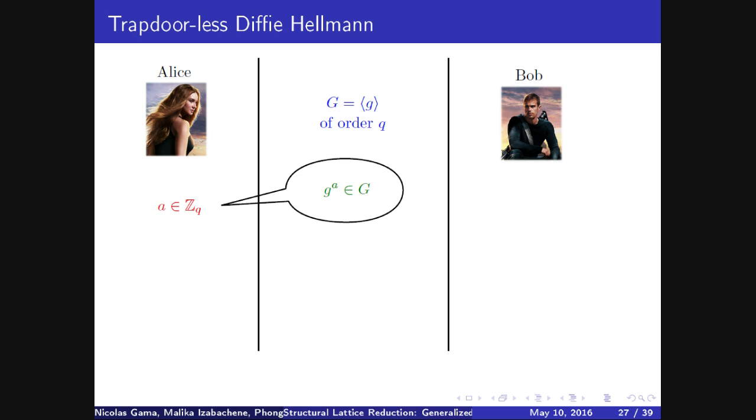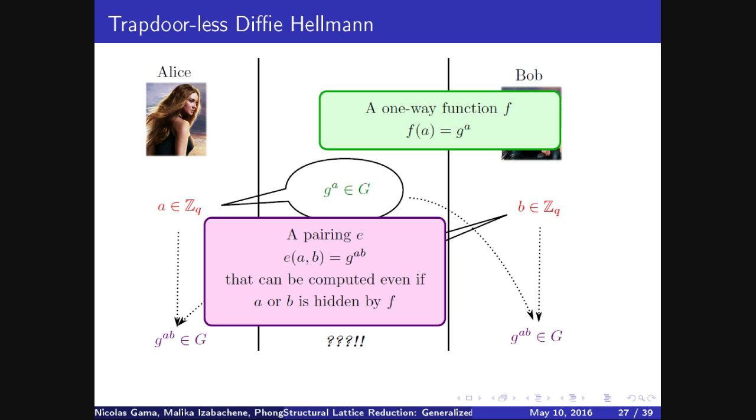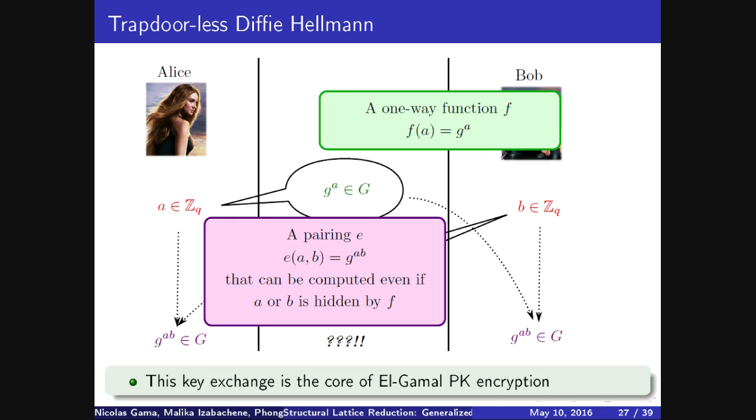What is more interesting is the Diffie-Hellman-based cryptography. So let's recall what is Diffie-Hellman. We all know it's a key exchange between Alice and Bob. Alice picks a random integer modulo q and sends g^a. Bob picks a random integer and sends g^b, and both will compute the same key, g^{ab}, out of that. So in this setting, you combine a one-way function, which is the discrete log one-way function, the exponentiation, f(a) = g^a, with a pairing e(a,b) = g^{ab}. And this pairing has the property that it can be computed even if either a or b is hidden by f, not both. And the security is the DDH assumption that you cannot distinguish ElGamal-Diffie-Hellman triples from random.